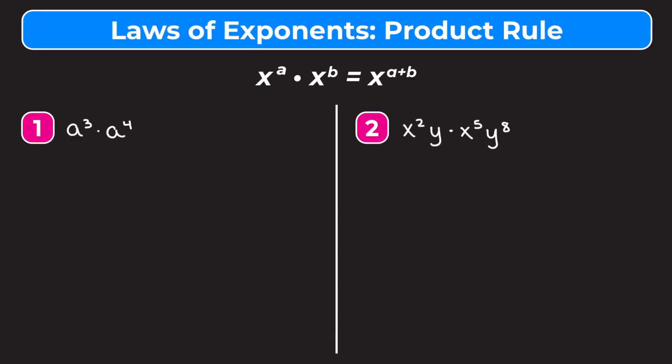In this video we're learning about the laws of exponents and the first law we're learning about is called the product rule. If we look at the top of our screen we'll see this rule that says x to the a times x to the b is equal to x to the a plus b, and I'm going to use example one to explain why this rule works.